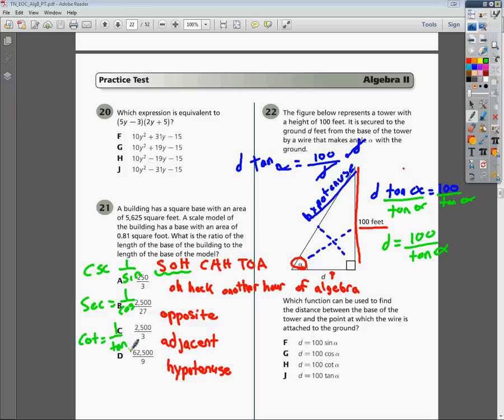Well, going back to our answer, we end up with D equals 100 over tangent, so tangent's on the bottom. So the opposite of tangent being on the bottom is putting it on the top and making it cotangent. So D would equal cotangent of 100, or D equals 100 times cotangent of alpha, which is going to give us answer choice H. Good luck. I hope this helps you.